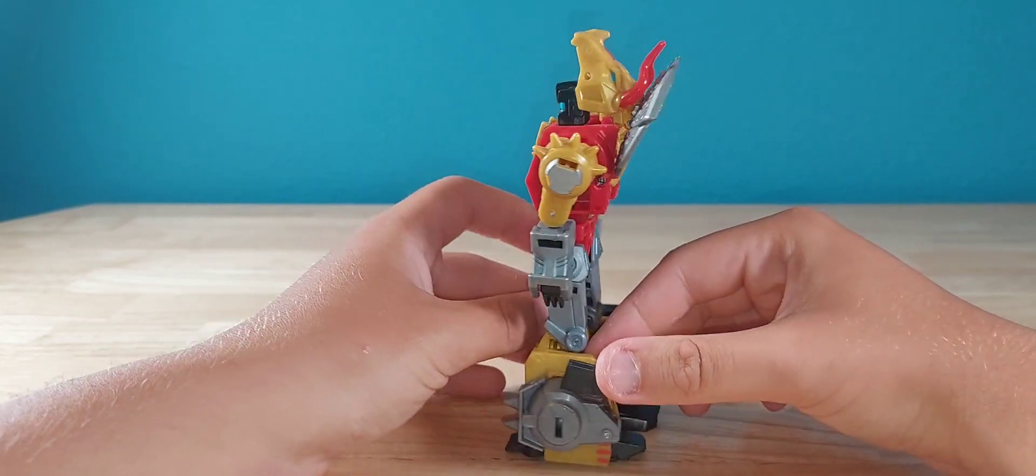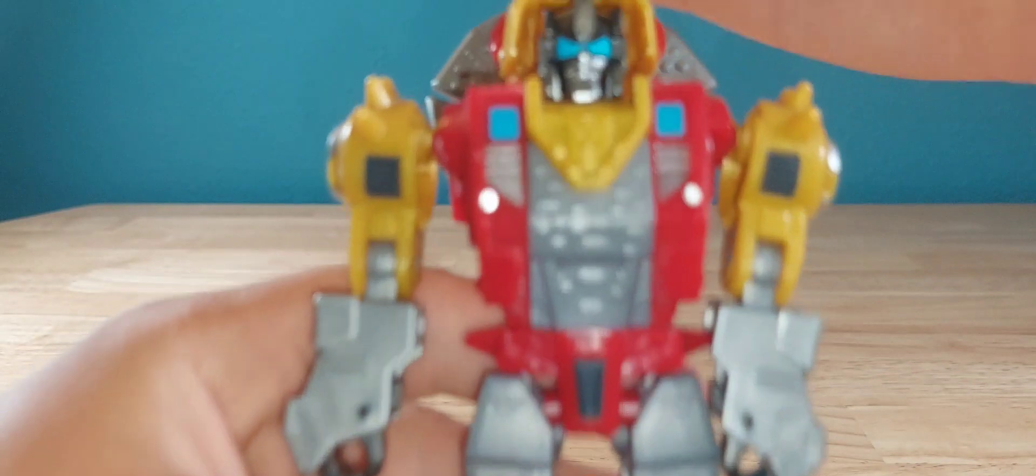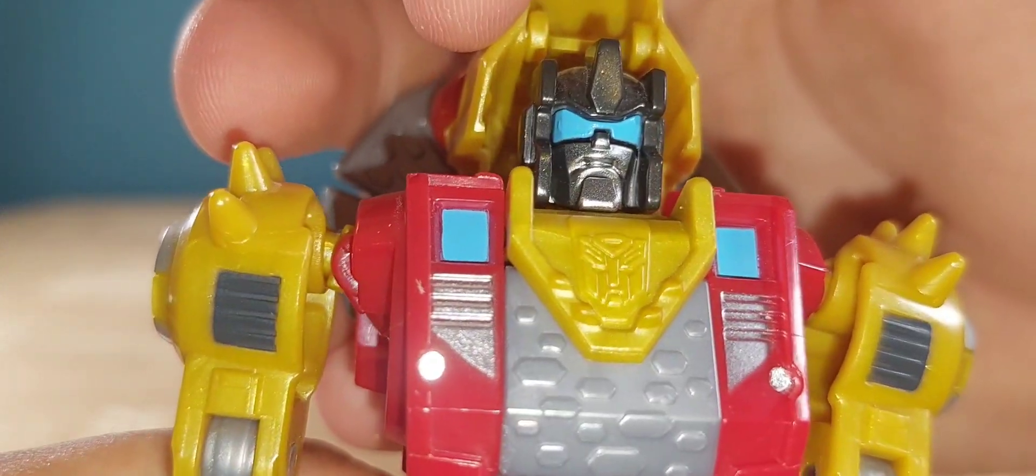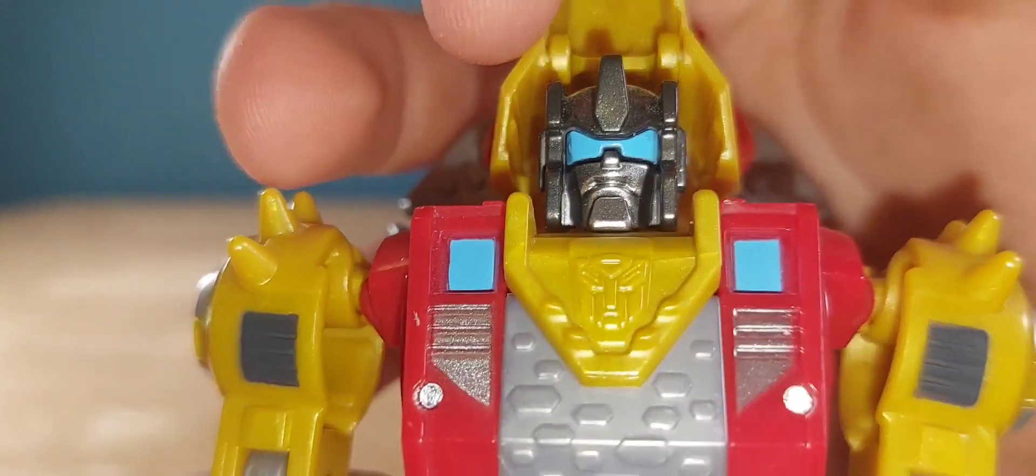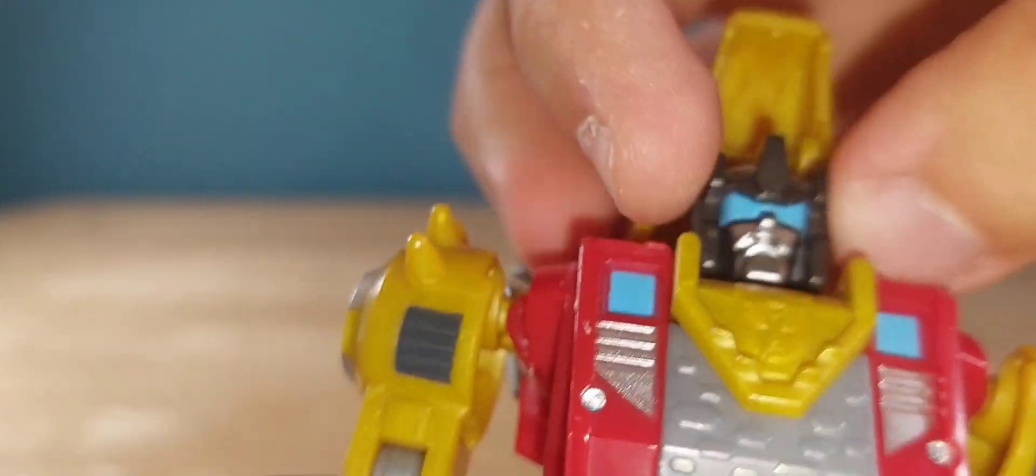Here we have him in his robot mode, and not a bad looking robot. Very clean, which is nice. Close up on that head sculpt, he looks very mad, but you get a nice Allspark blue for the eyes, and the face picked out in silver, which is nice. Not too shabby.